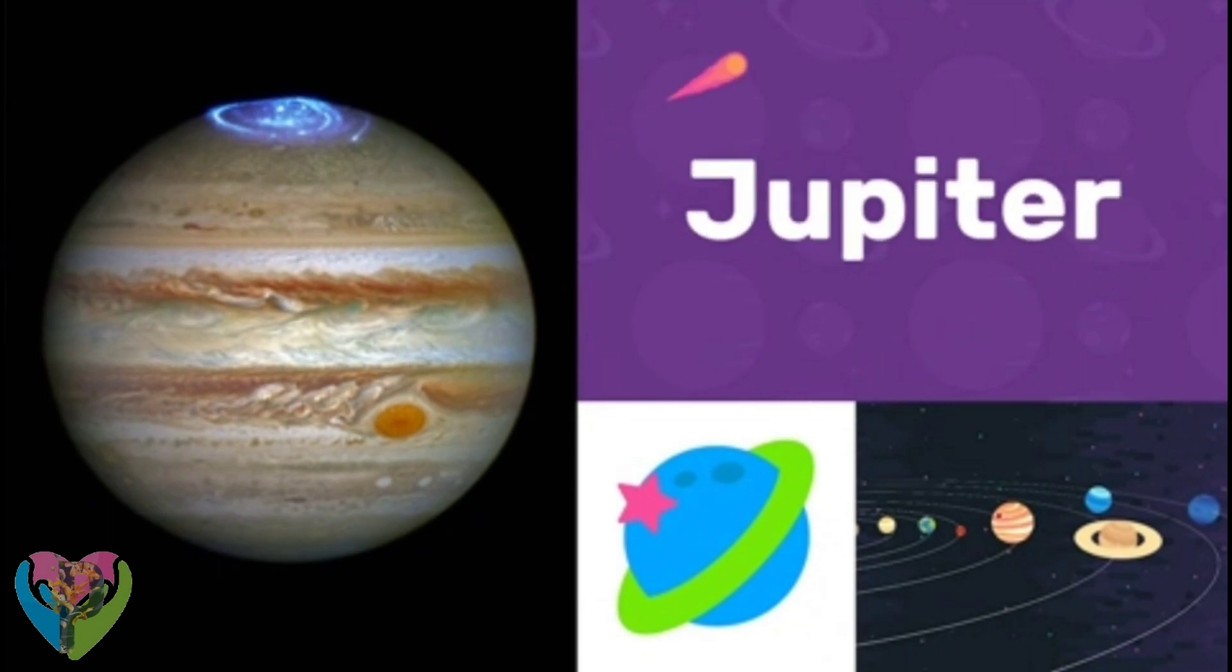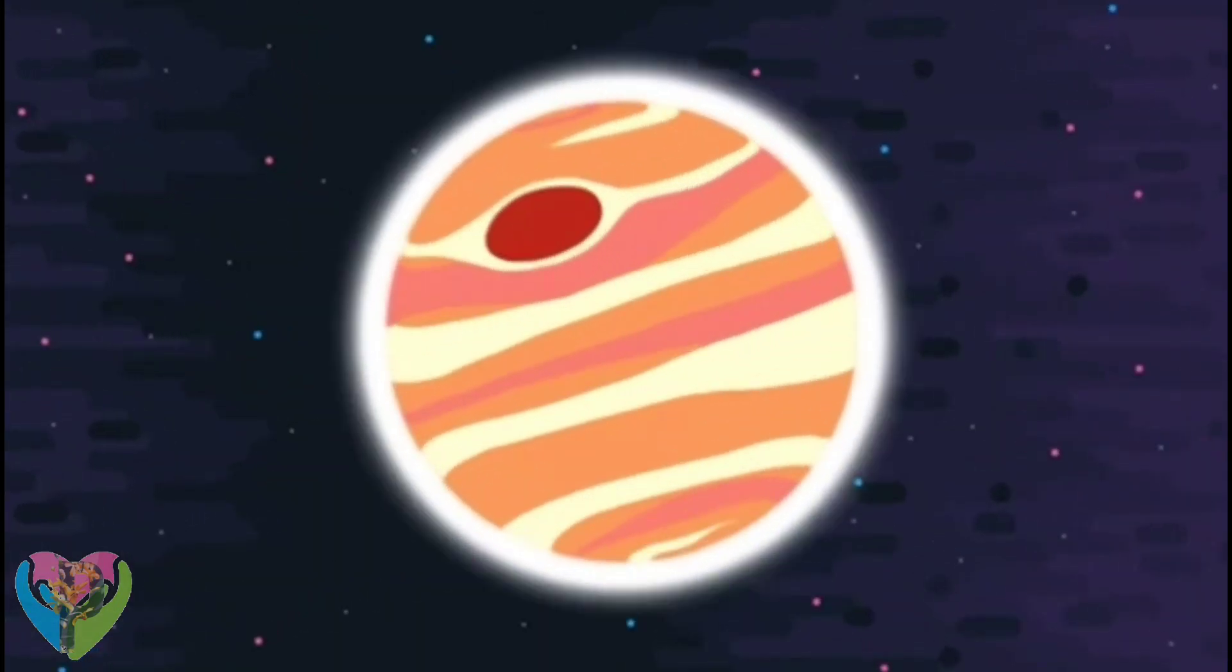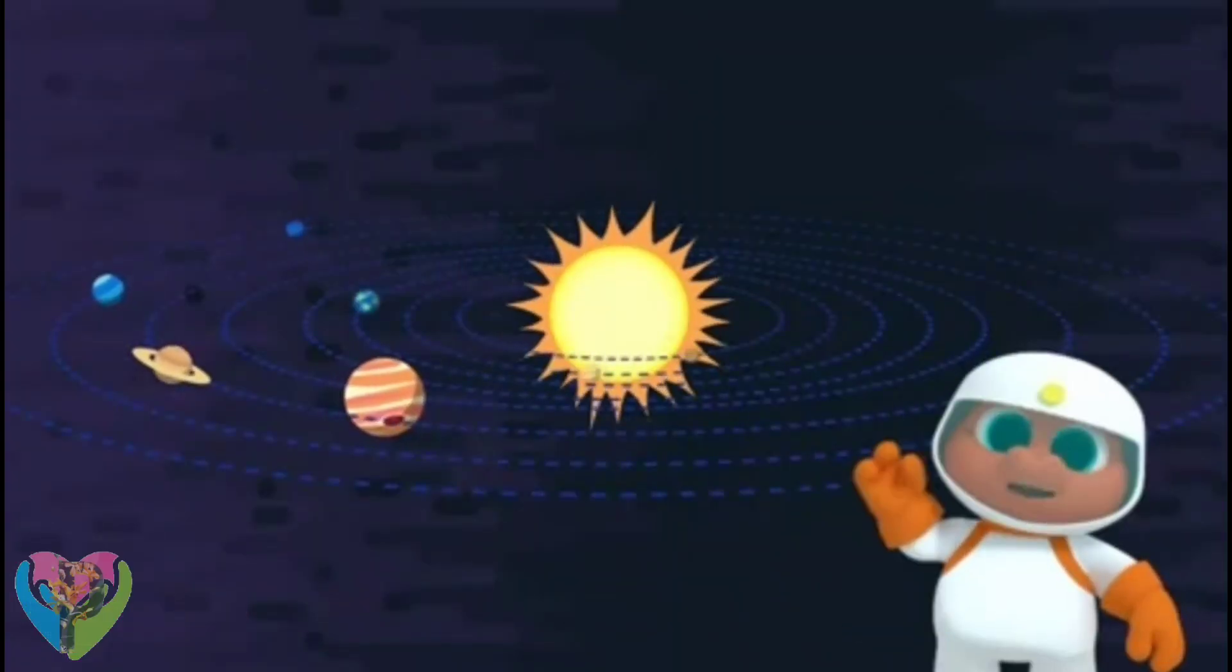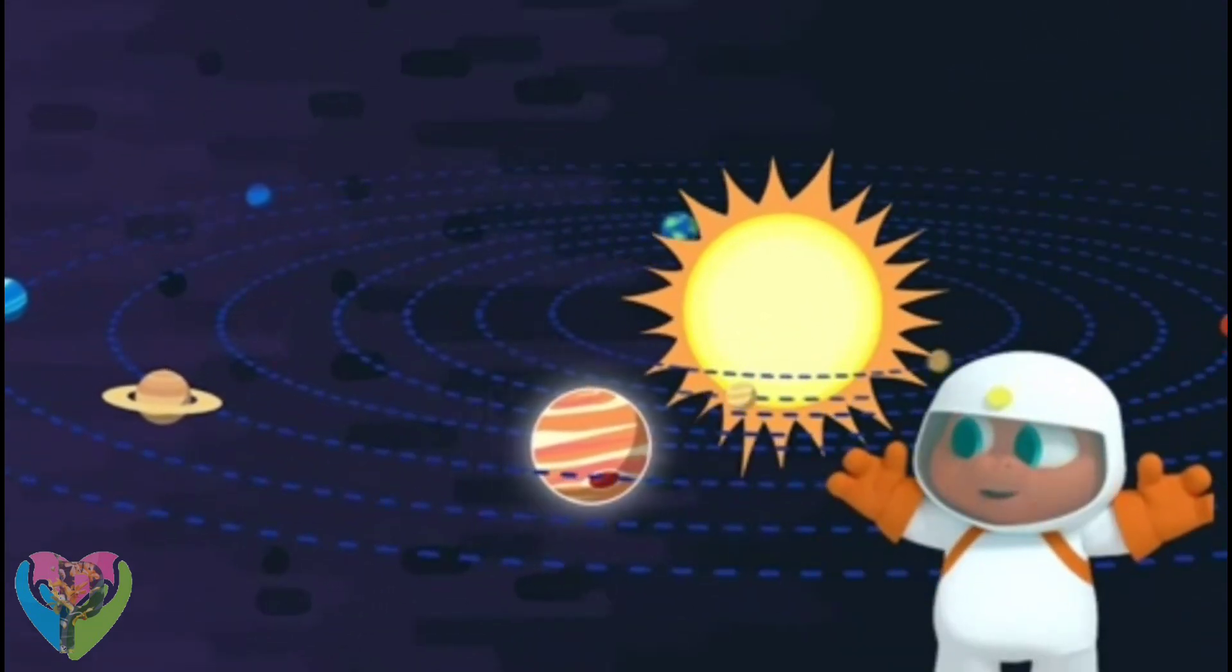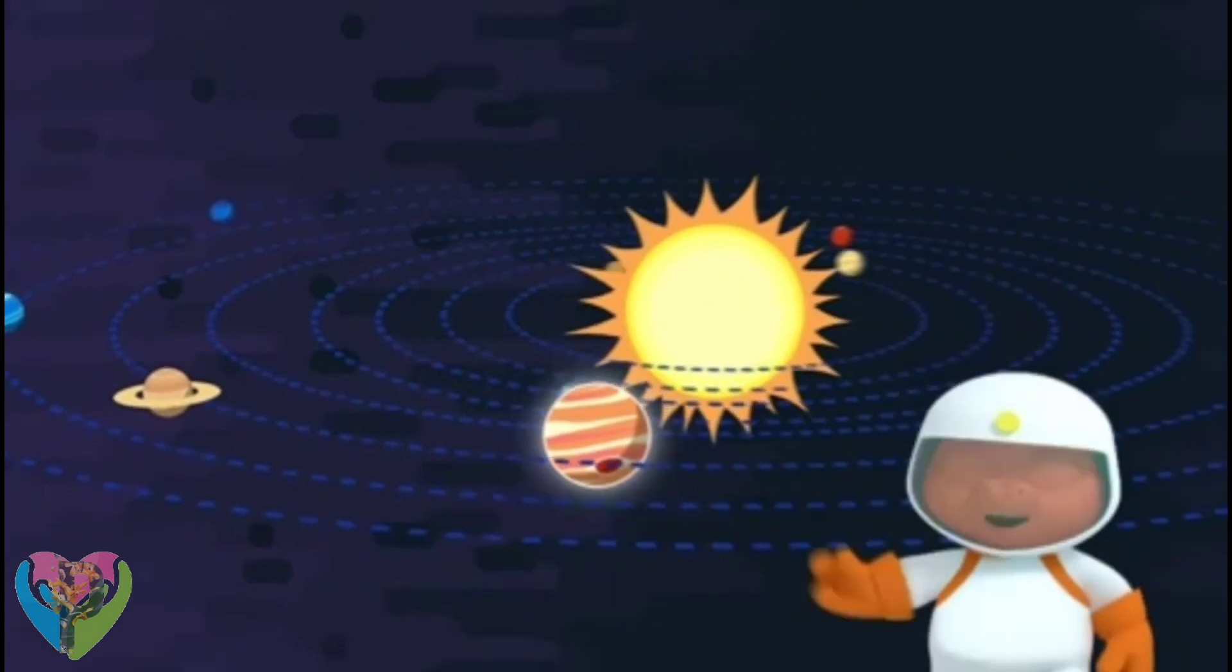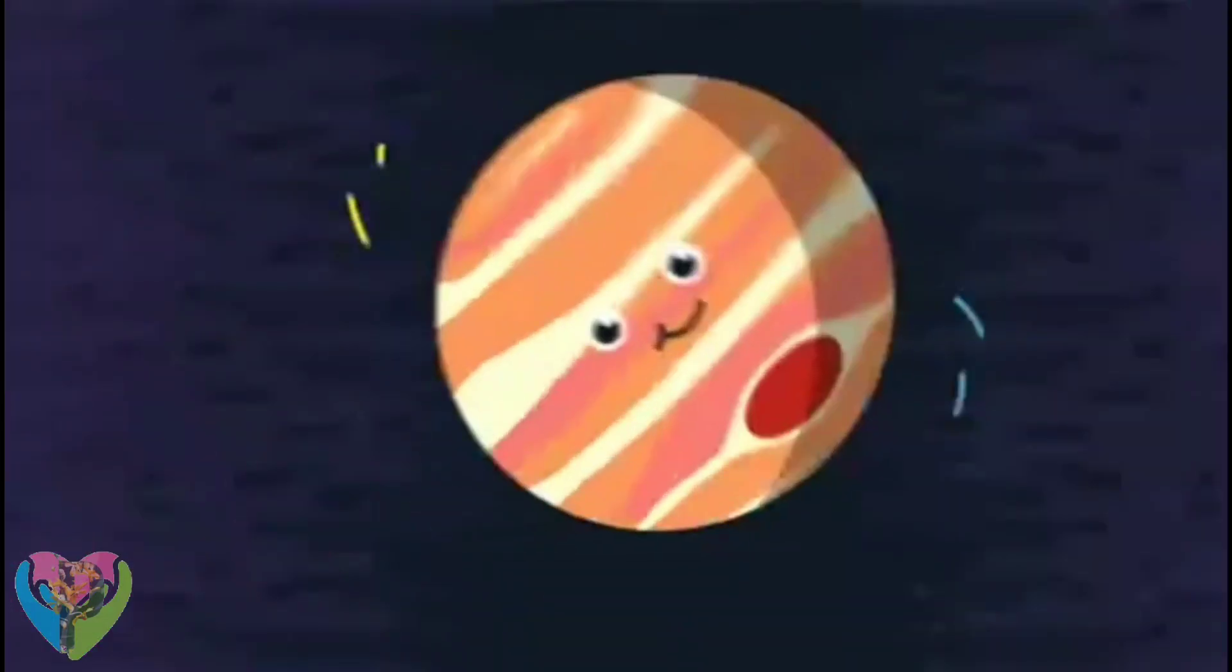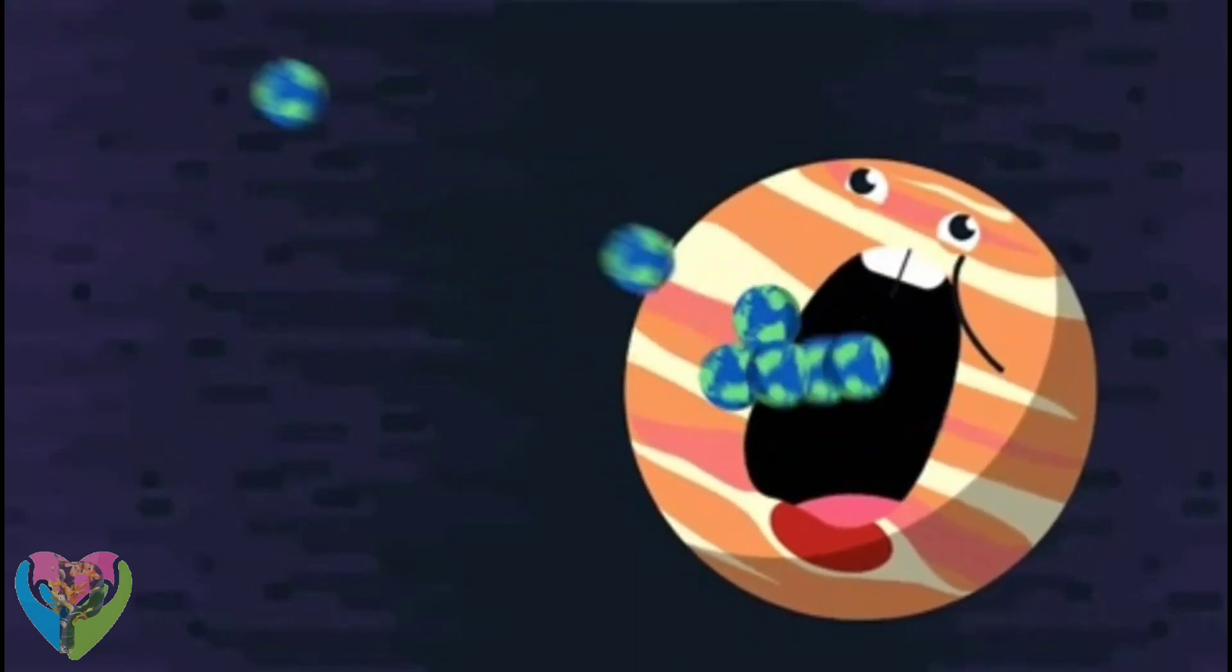Jupiter! Jupiter is the fifth planet from the Sun. Welcome to the eight planets in our solar system. This one is the biggest of them all. It's Jupiter. And it's super massive. You could fit 1,300 Earths into Jupiter, Gorby.